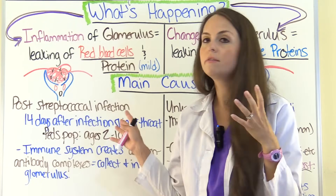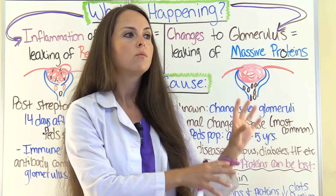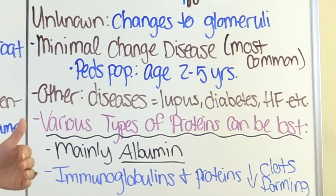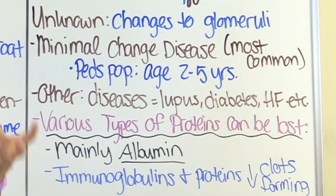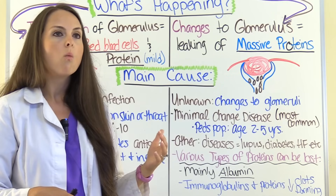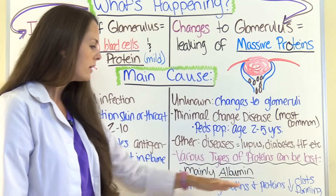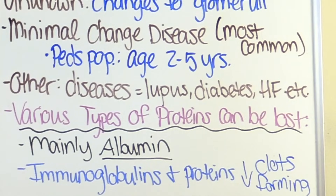With acute glomerulonephritis, we're losing red blood cells and a mild amount of protein. With nephrotic syndrome, we're losing massive amounts of protein of various types. The main type lost is albumin, and because so much is lost in the urine, it will deplete our blood of albumin. Other things that can be lost are immunoglobulins, which help fight infection, putting the patient at risk for infection. They can also lose proteins that help decrease clot formation, meaning the patient is at risk for developing random clots.